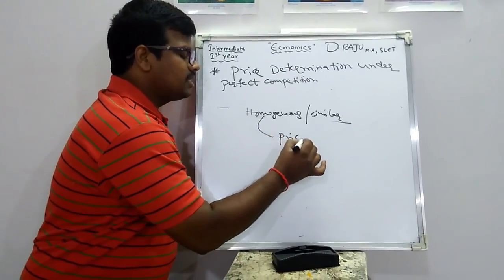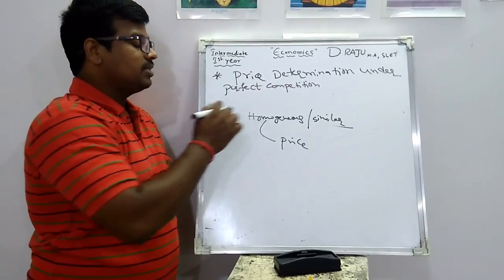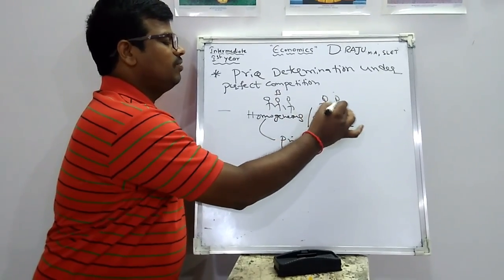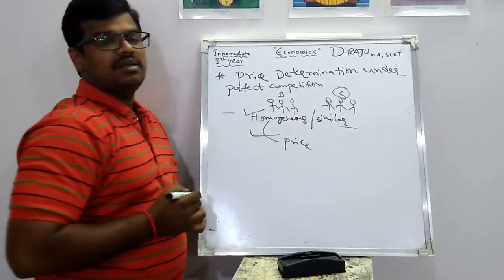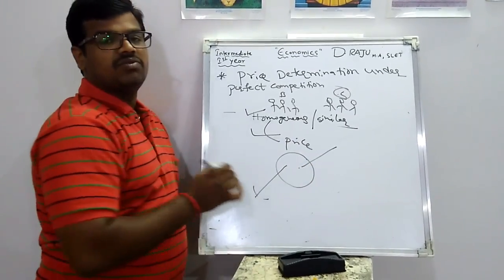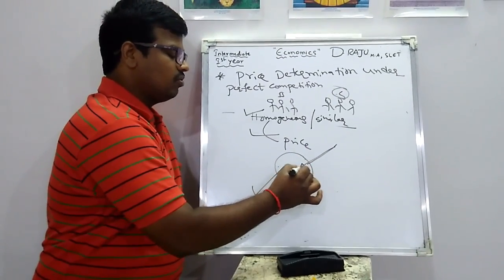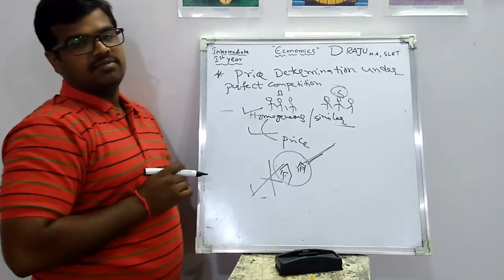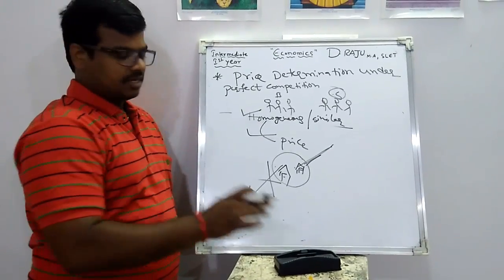That is the reason price remains the same under the perfect competition market. There exist a large number of buyers and sellers, goods are homogeneous, and there is free entry and free exit for firms in the industry. When firms are getting more profit, new firms enter the industry. When firms are getting losses, existing firms exit from the industry.